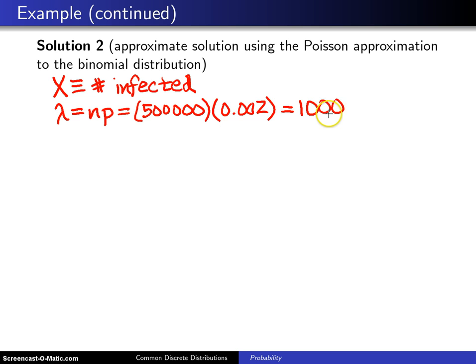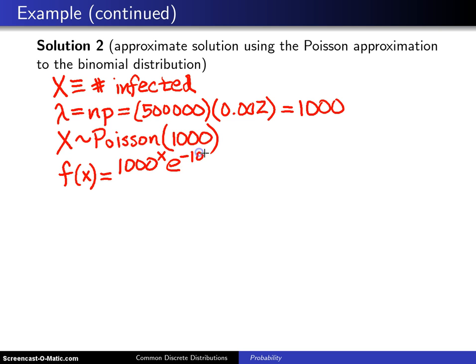Well, 1,000 is the expected number of people that are infected with the disease and X will have in this case an approximately Poisson distribution with a mean of 1,000. So in this case, the probability mass function of the Poisson distribution is 1,000 to the X, e to the minus 1,000 divided by X factorial and that's good for X equals 0, 1, 2